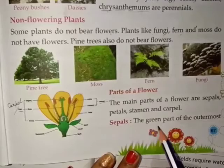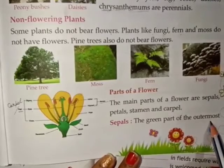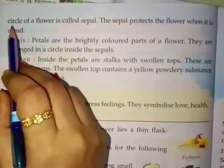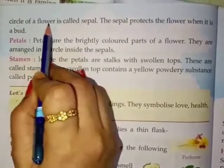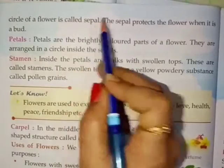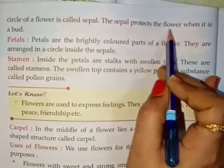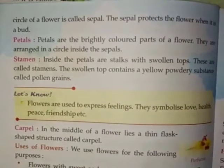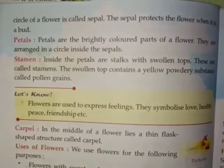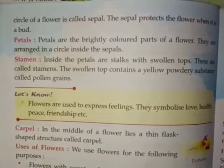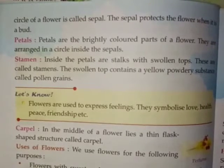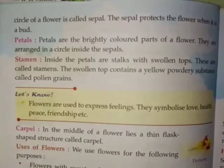Sepals are the green part of the outermost circle of a flower. The sepal protects the flower when it is a bud. The green leaves cover the bud fully. As it opens, the sepals open and the petals open.